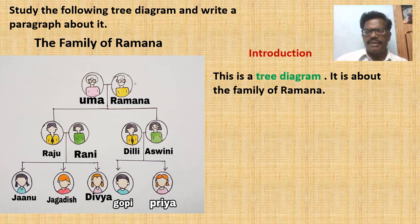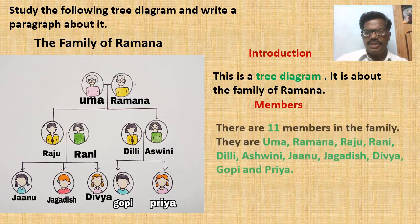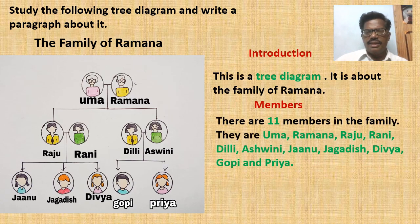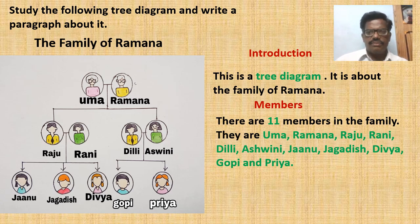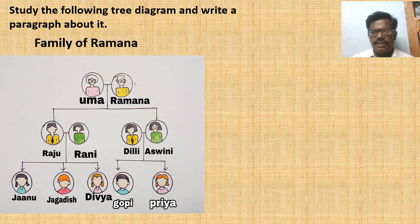Next, they may be asked to write the number of members in the family. They may write like this: 'There are 11 members in the family. They are Umma, Ramana, Raj, Rani, Dili, Asvini, Janu, Jagdish, Divya, Gopi, and Priya.' Now students may be asked to write who's who in the family.